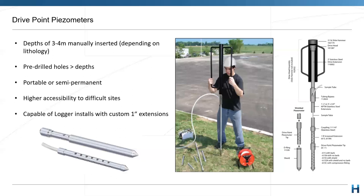This is a drive point piezometer. You'd use these in areas where it's difficult to get access for a drill rig, or for a very short-term low flow sampling exercise where the depth of water is less than about three metres — even three metres is quite a long way down with this technology. The only way you can really collect a low flow sample from a drive point is using the peristaltic pump, which you can see on the ground there. Drive points combined with a peristaltic pump are a useful way of collecting low flow samples in shallow systems.